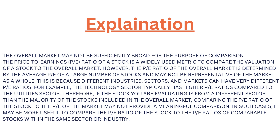However, the PE ratio of the overall market is determined by the average PE of a large number of stocks and may not be representative of the market as a whole. This is because different industries, sectors, and markets have different PE ratios. For example, the technology sector typically has a higher PE ratio compared to the utility sector. Therefore, if a stock you are evaluating belongs to a different sector than the majority of stocks included in the overall market, comparing the PE ratio of the stock to the PE ratio of the market may not provide a meaningful comparison.